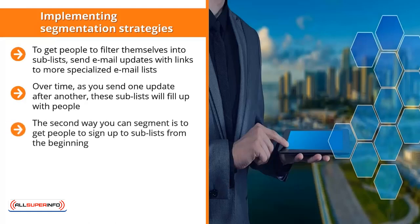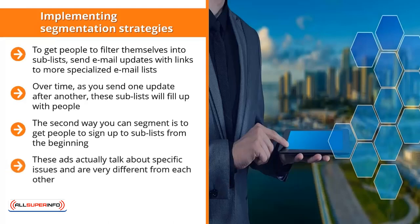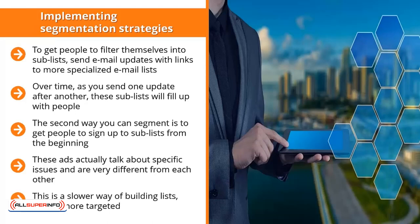The second way you can segment is to get people to sign up to sub-lists from the beginning. You're not starting out with a general list. Instead, when people go to your blog or website, they see different ads for mailing lists. These ads talk about specific issues and are very different from each other. When somebody clicks on a particular ad, they sign up for a list that only talks about the issues raised by that ad, and offers incentives addressing tightly defined specific issues. This is a slower way of building lists, but it's more targeted, and the slow growth can be offset by higher sales conversions.